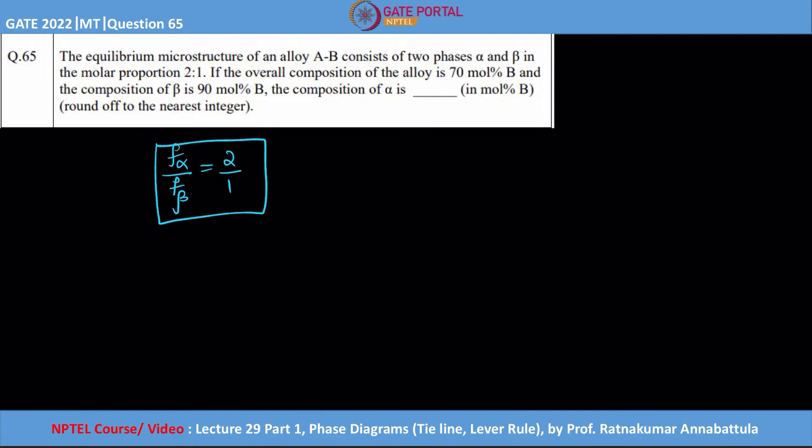This is what is given from the microstructure. From the microstructure, always remember you are looking at one surface and you will be getting the mass fractions. If the overall composition of the alloy is 70% B and the composition of beta is 90 molar % B, the composition of alpha is what we need to find.